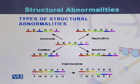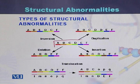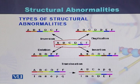To understand the types of structural abnormalities, we consider a chromosome that has genes A, B, C, D, E, and F.